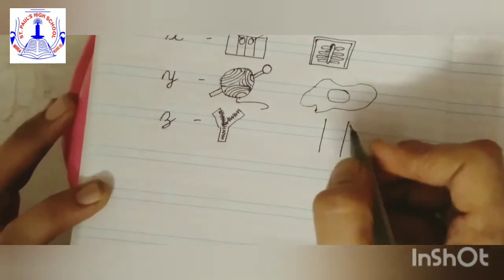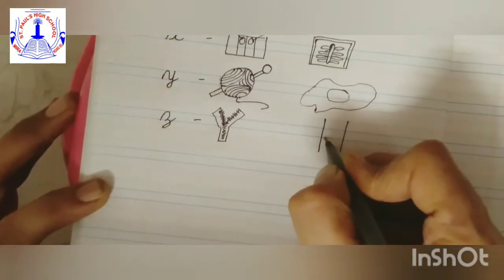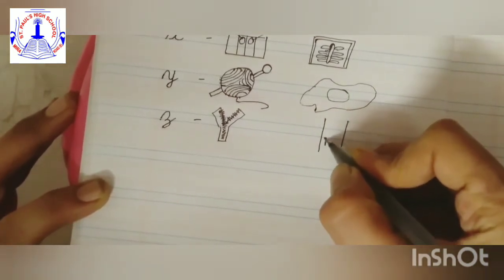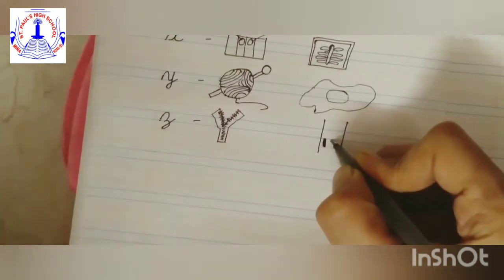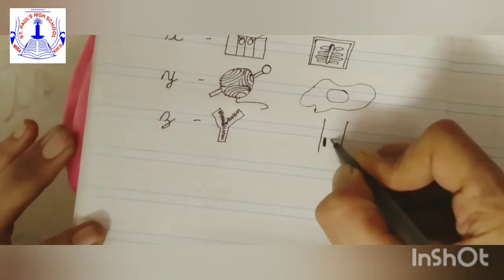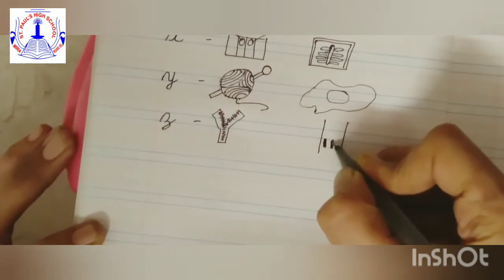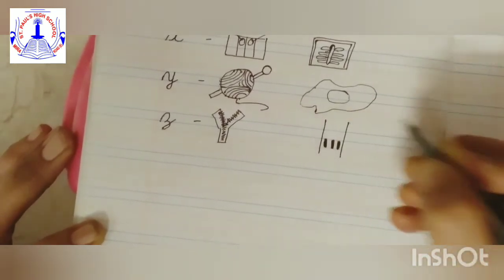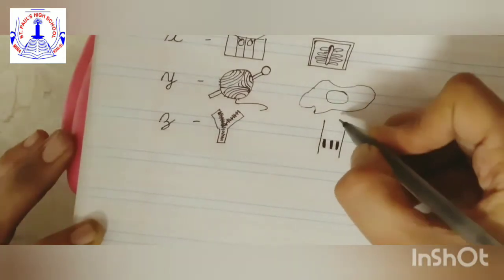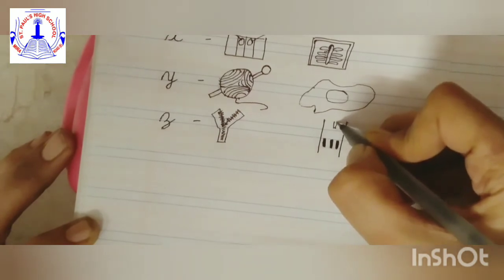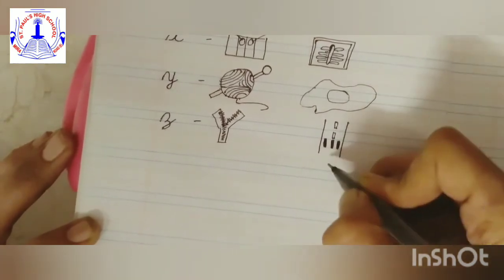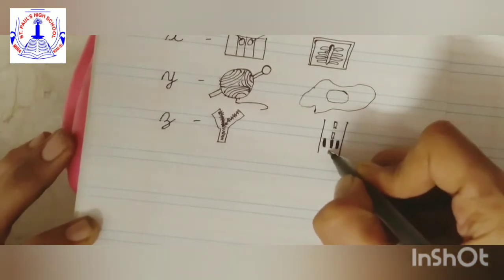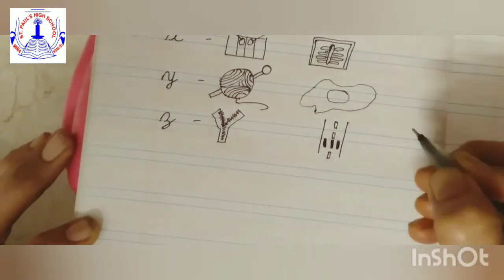And here we will make a zebra crossing, a thick slipping line. Thick slipping line like this. Just make it dark. This is the zebra crossing, and here we will make a road, small small rectangle shapes.